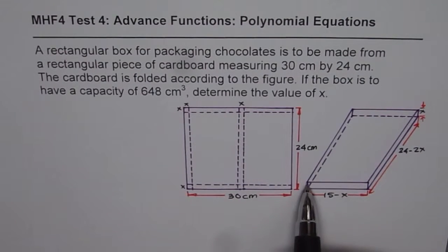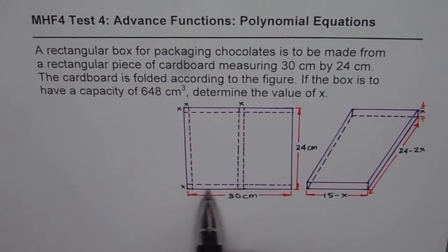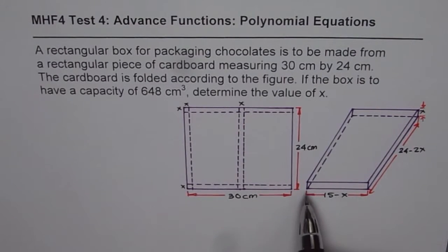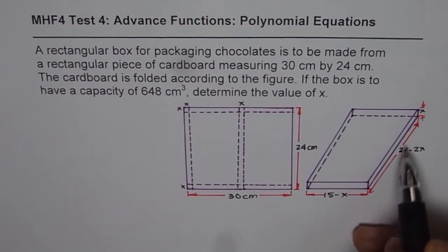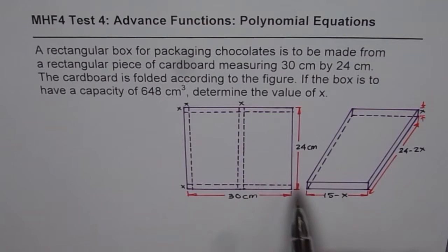So the width actually becomes half of 30 minus 2x, correct? X from here and here, two places has been taken out. So the width is 30 minus 2x divided by 2. So we get 15 minus x. The length of the box will be 24 minus 2x. While you are fortunate to get a figure, in the test you may not get a figure, but you may have to draw one which is similar to this.